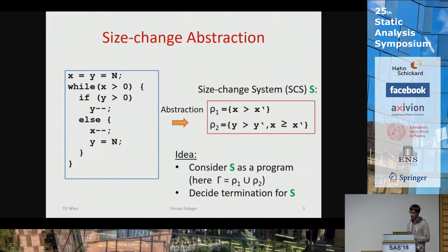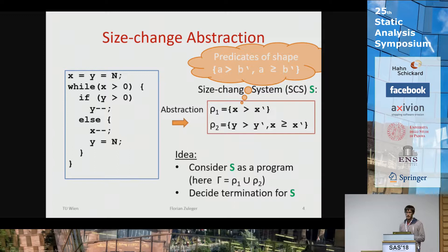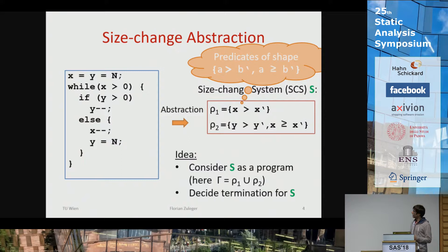You can view this abstraction as an abstract program defining a transition system. Relating to the first talk today, the interesting thing about these kinds of programs is that they are so restricted that you can actually compute the transitive closure precisely.